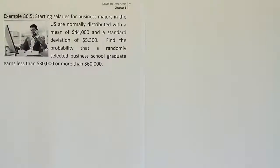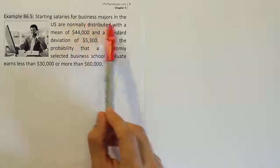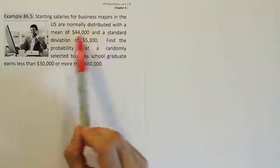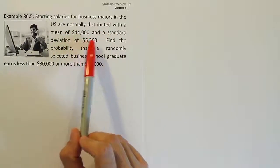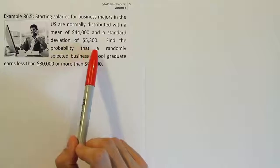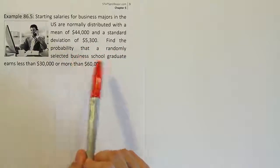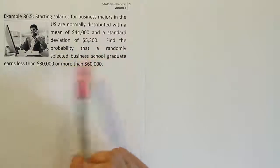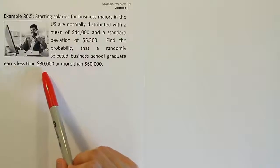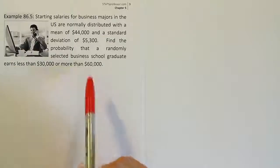Example 86.5. Starting salaries for business majors in the US are normally distributed with a mean of $44,000 and a standard deviation of $5,300. Find the probability that a randomly selected business school graduate earns less than $30,000 or more than $60,000.